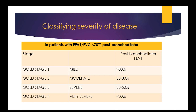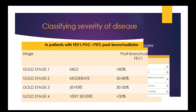The staging of COPD into mild through very severe has not changed. What stage a patient is categorized into will be determined by their pulmonary function test. Their post-bronchodilator FEV1 to FVC ratio will be less than 70. Then you look at the post-bronchodilator FEV1: greater than 80 is mild or stage 1; 50 to 80 is moderate, stage 2; 30 to 50 is severe, stage 3; and less than 30 is very severe or stage 4.